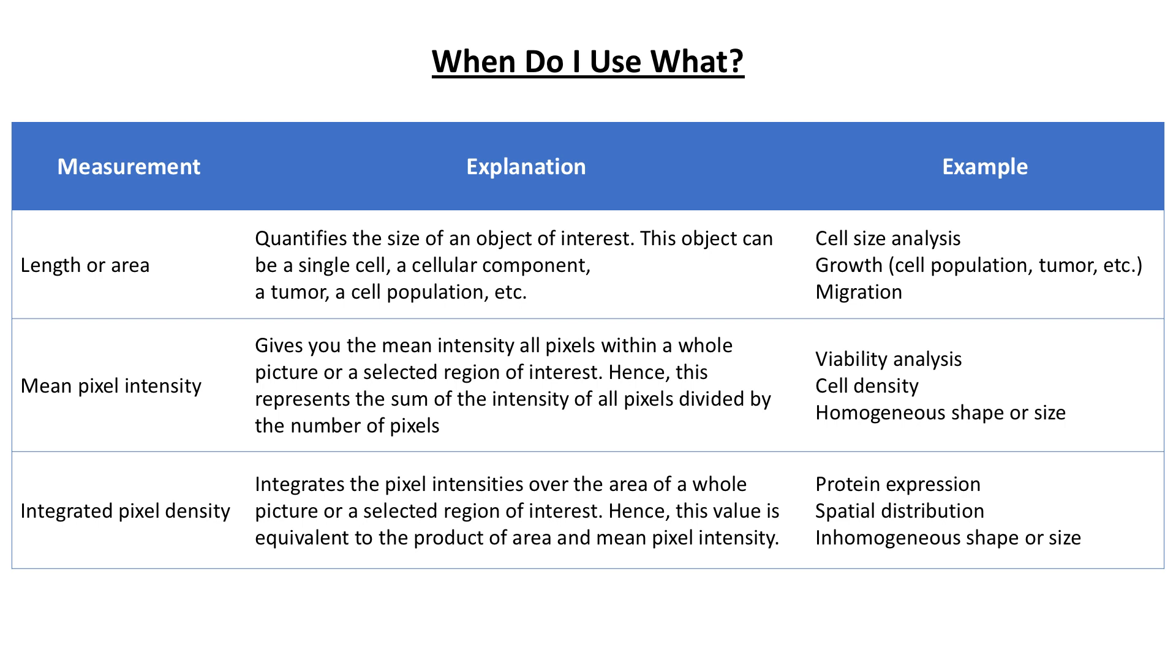In summary, the length or area of an object of interest is determined by counting the number of pixels and can be used for example to analyze cell size, growth or migration.